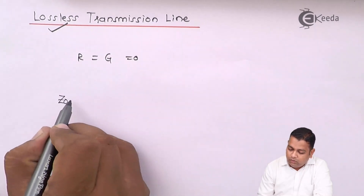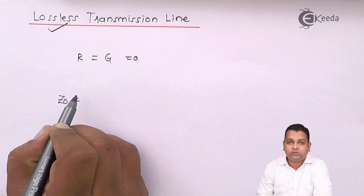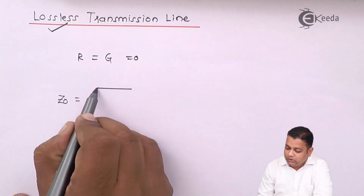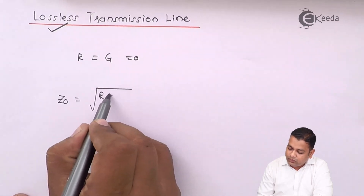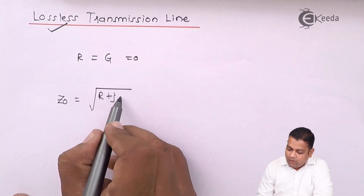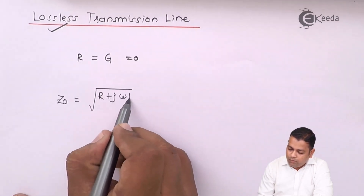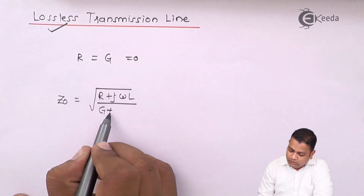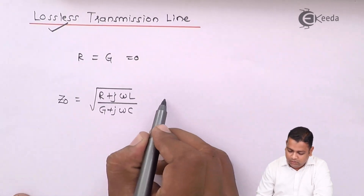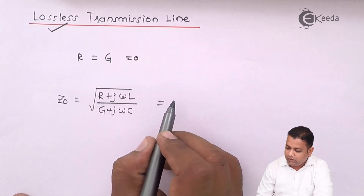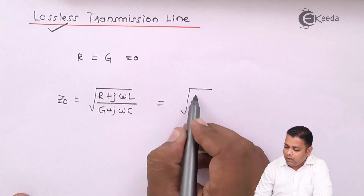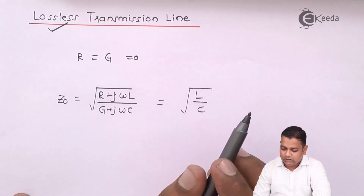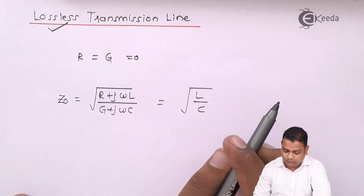The first parameter of importance is the characteristic impedance Z0, which in general is given by the square root of (R + jωL) divided by (G + jωC). For the lossless condition, with R = 0 and G = 0, this simplifies to the square root of L divided by C. This is a purely resistive condition.